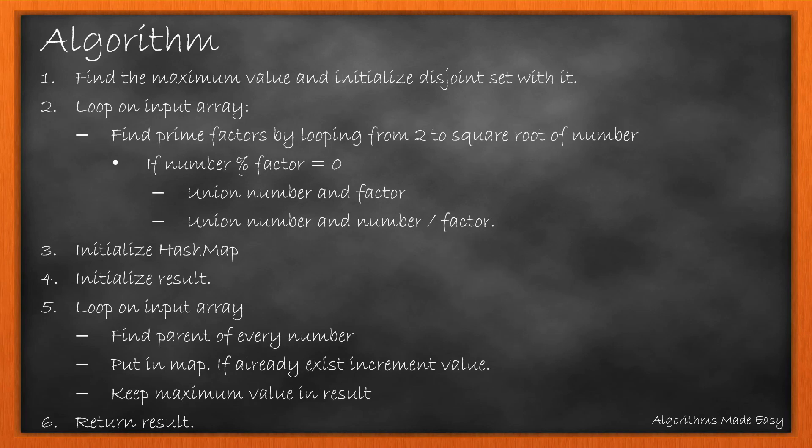Summarizing our steps, we will first find the maximum element in the input array and initialize our custom disjoint set with it. With a loop on the input array and for every prime factor, we'll create two unions. First, between the number and the factor. Second, between the number and the remaining factors. We then initialize our hash map and our result variable too.